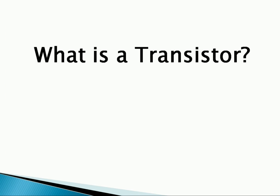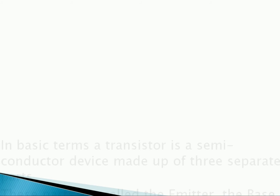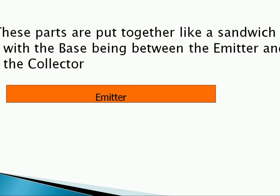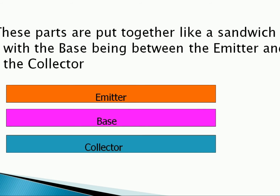What is a transistor? In basic terms, a transistor is a semiconductor device made up of 3 separate parts. These parts are called the emitter, the base, and the collector. These parts are put together like a sandwich with the base being between the emitter and the collector.